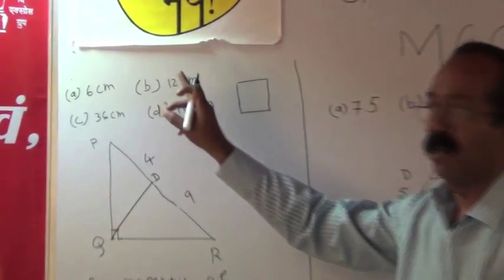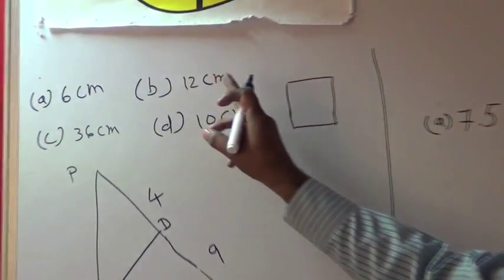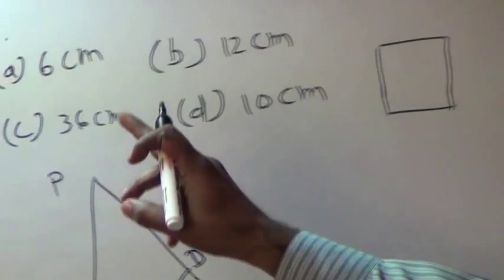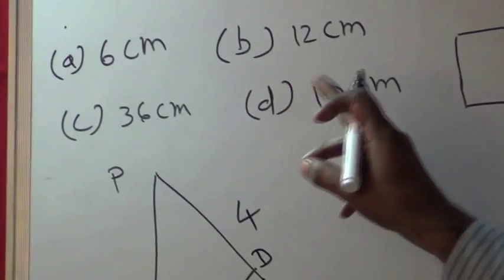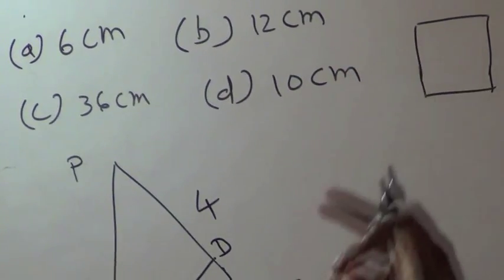The alternatives are: A) 6 cm, B) 12 cm, C) 36 cm, D) 10 cm.